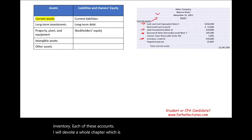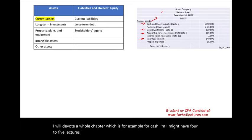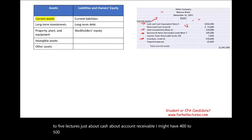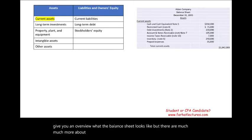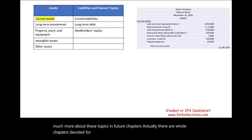For cash, I might have four to five lectures just about cash. For accounts receivable, I might have four to five lectures, and similarly for inventory, and so on. So in this session I'm going to give you an overview of what the balance sheet looks like, but there is much more about these topics in future chapters — whole chapters devoted to each of these topics. But let's start to define current assets.